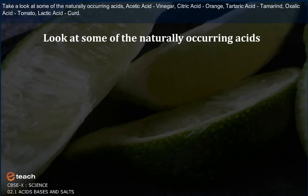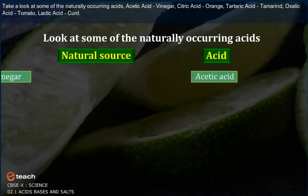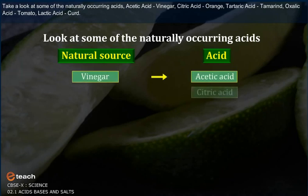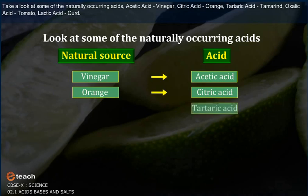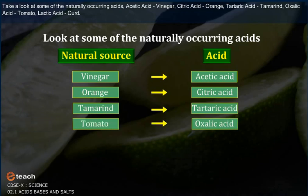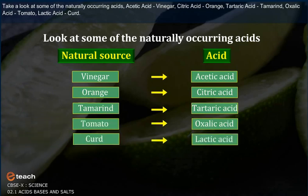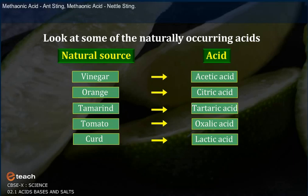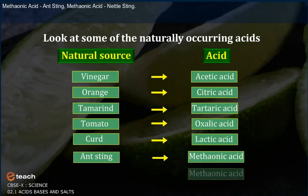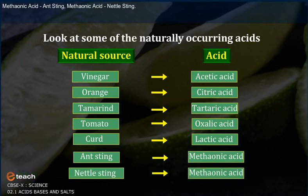Here are some naturally occurring acids: acetic acid is present in vinegar, citric acid in orange, tartaric acid in tamarind, oxalic acid in tomato, lactic acid in curd, and methanoic acid in ant sting. Methanoic acid is also present in nettle sting.